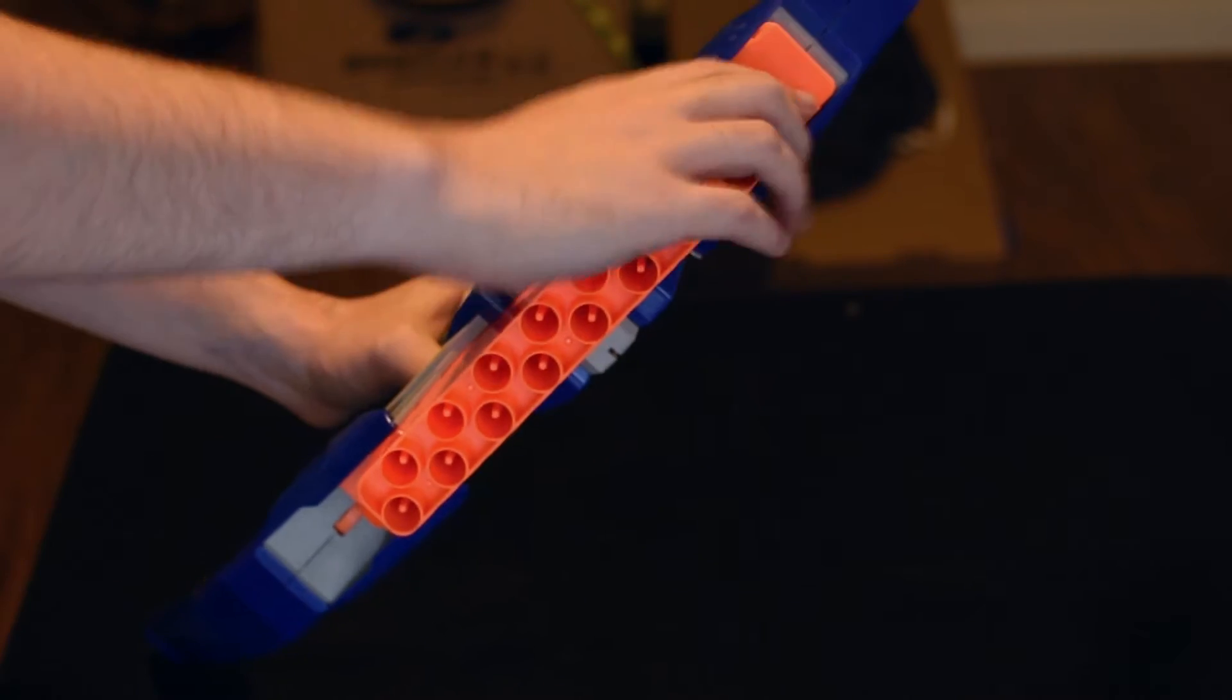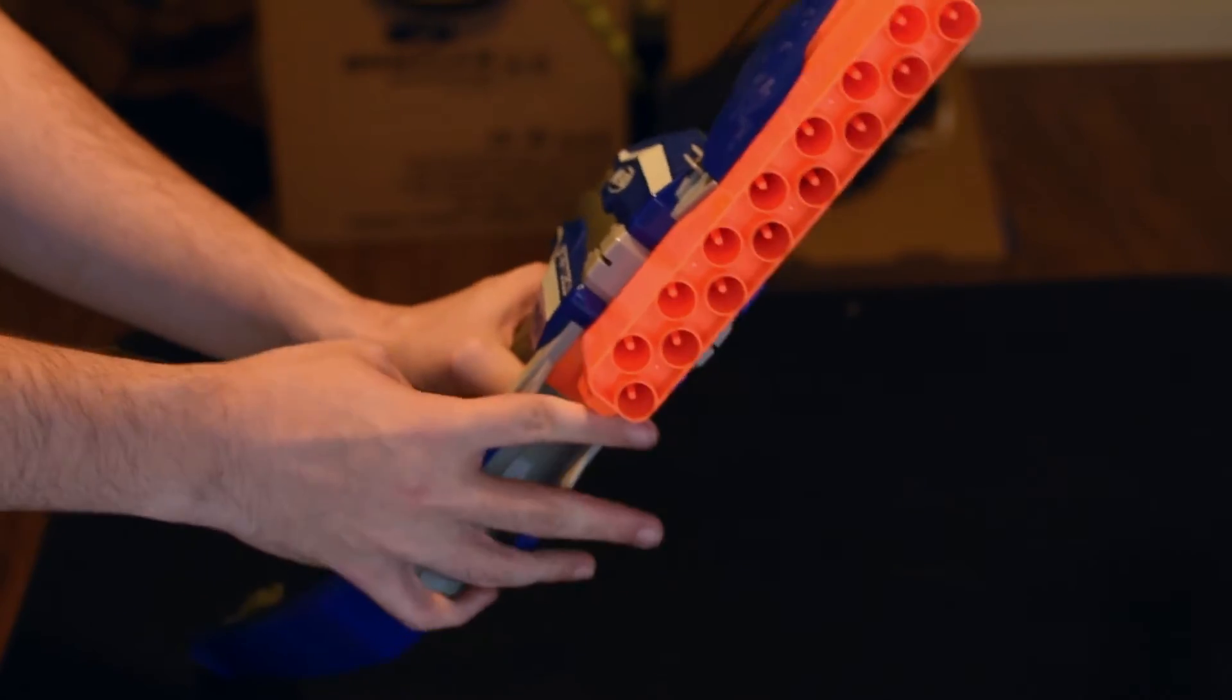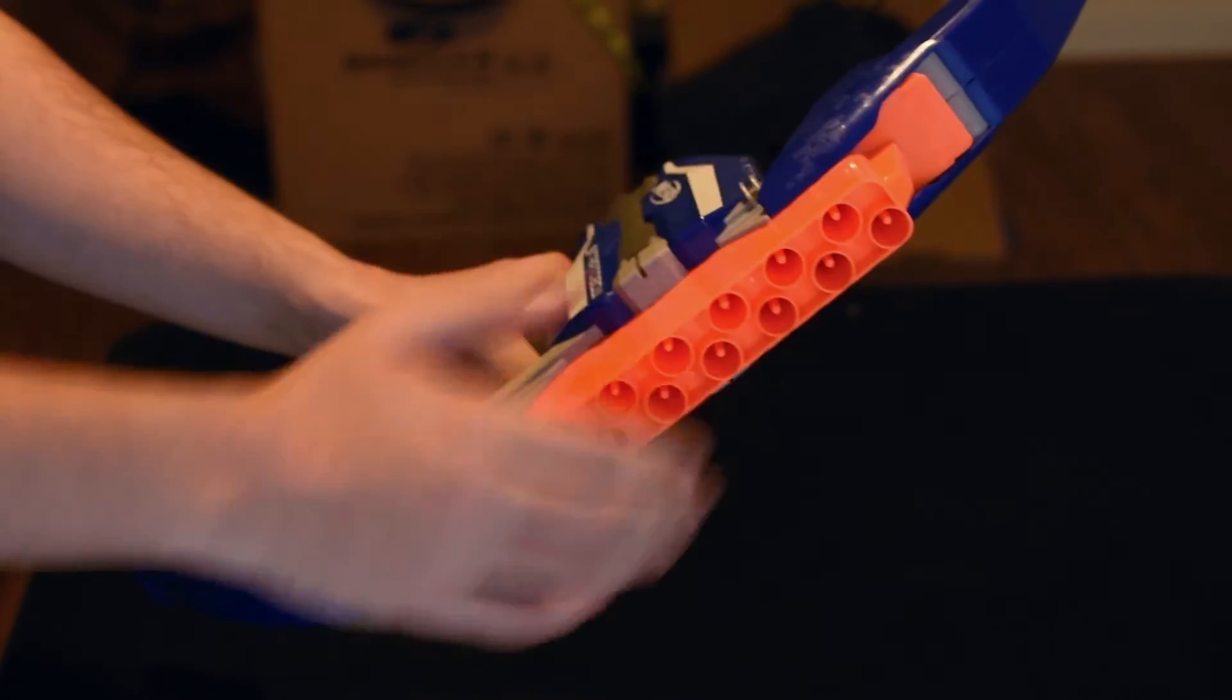The clip on the front can be moved either up or down so that if you reload at the top of the clip while you're currently firing darts from the bottom you don't have to go all the way through the clip to recycle it.